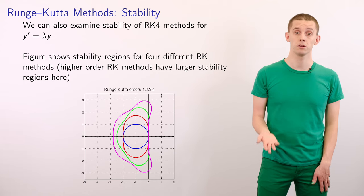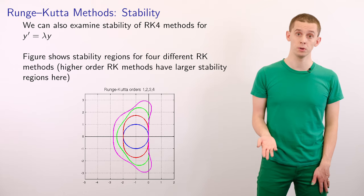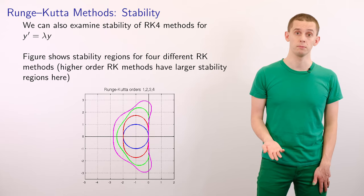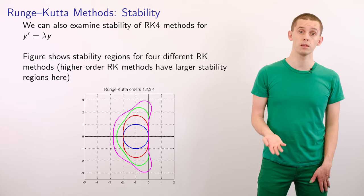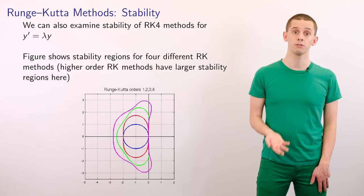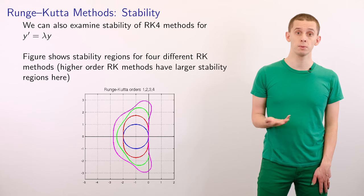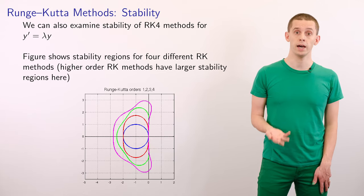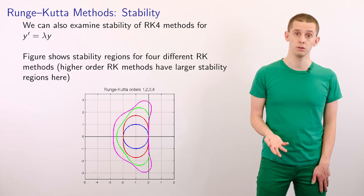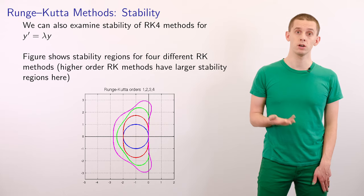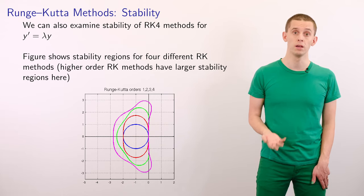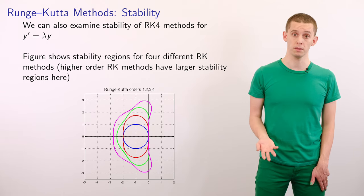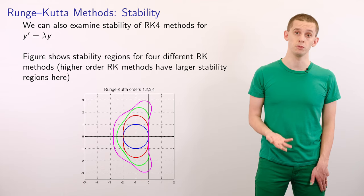We can evaluate the stability properties of Runge-Kutta methods applied to the standard test problem y' = λy. The figure shows stability regions for Runge-Kutta methods from orders 1 to 4. For order 1, we have the Euler stability region — a unit circle centered on (−1, 0) in the complex plane. For higher-order methods, the stability region grows slightly. Notably, for low-order Runge-Kutta methods, the stability regions don't depend on the specific coefficient choices, so the order-2 stability region is common to improved Euler, modified Euler, and Ralston.